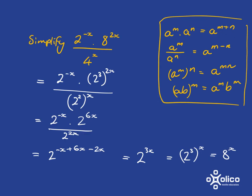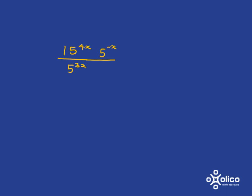Either way, this or this would be fine. I just want you to notice that 2 to the 3x is the same as 2 cubed to the x. So it's the same as 8 to the power of x. Let's have a look at another quick example.